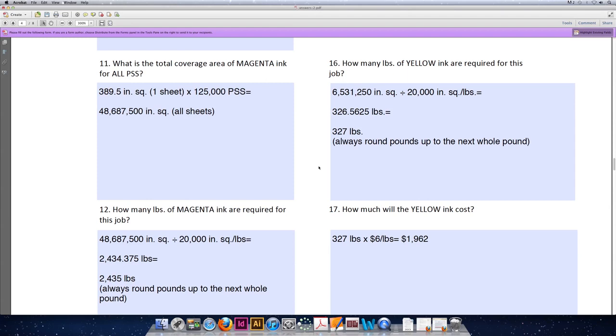However, we cannot purchase part of a pound, so we'll round that up to the next whole number to purchase 327 pounds. The number is always rounded up to the next whole number. We never round down for pounds of ink.